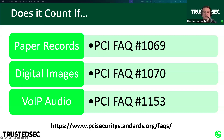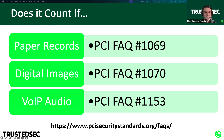I usually see this with call centers — they think they have a nice small scope with their P2PE terminals where everything's encrypted. Then I ask how they're getting the card numbers, and it's coming in over voice-over-IP. Now they find out their entire voice-over-IP network is in scope. And that applies even if those calls are not recorded, because processing and transmission counts as in scope — your voice-over-IP is transmitting account data.